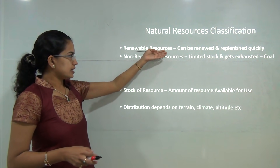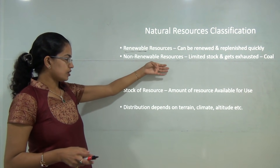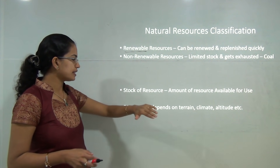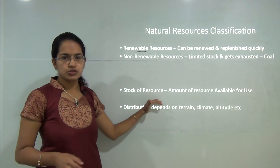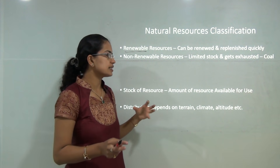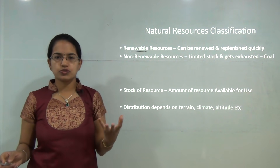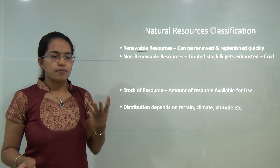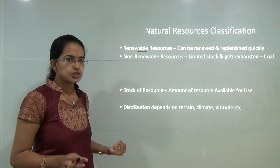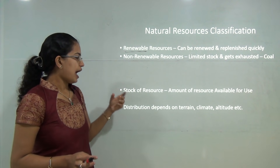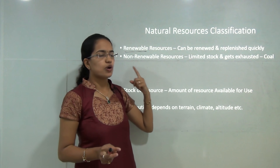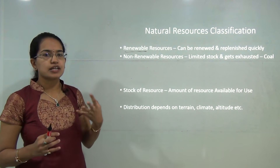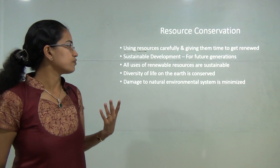We also have another classification that is renewable and non-renewable. A common related term is stock of resource, which implies the available amount of a resource there is for use — whatever amount of resource we have is known as stock. The distribution of resources throughout the world depends on various parameters like terrain, climate, and altitude.